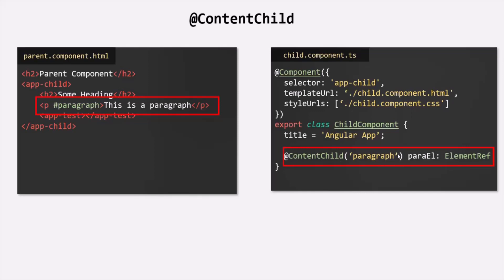To this ContentChild decorator, we are passing a selector. The selector in this case is a template reference variable. If you notice on this paragraph element, we have used a template reference variable, so we are using that as the selector. What ContentChild will do is look into the projected content and select the first matching element which matches this selector. In this case, this paragraph element has that template reference variable, so it will match and its reference will be assigned to this paraEl property. This is the use of the ContentChild decorator.